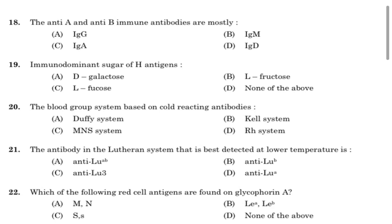Nineteenth question: immunodominant sugar of H antigens. Option A: D-galactose. Option B: L-fructose. Option C: L-fucose. Option D: none of the above. Answer is Option C, L-fucose.